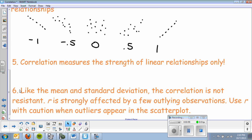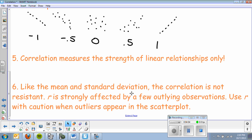Correlation measures the strength of linear relationships only. If the data is curved, or there is some curved pattern, correlation won't help you. Like the mean and standard deviation, the correlation is not resistant. It is strongly affected by a few outlying observations. Use r with caution when outliers appear in the scatter plot. Think of the T-Rex effect. You've got a really tall dinosaur with really short arms - that's an outlier. That's going to change your correlation.